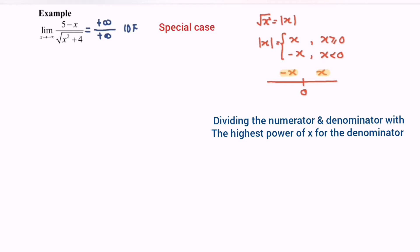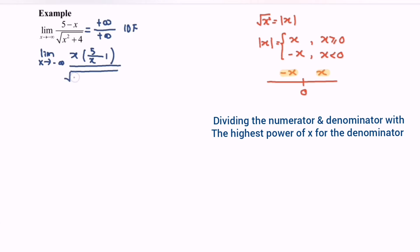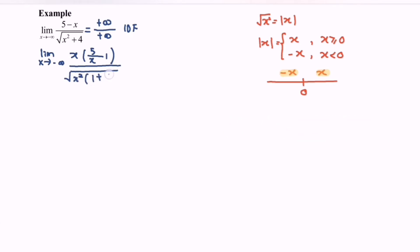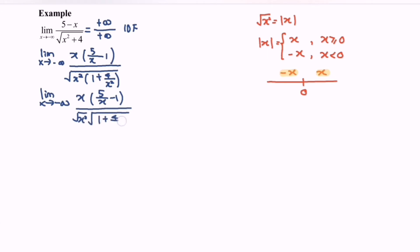So for this special case, what we have to do is factorize the situation. The limit when x approaches negative infinity: factor out x and we will have (5 over x minus 1) over the square root of x squared times the bracket (1 plus 4 over x squared) for the denominator. By using the properties of square root, we split the situation: limit when x approaches negative infinity gives us x times (5 over x minus 1) over the square root of x squared times the square root of (1 plus 4 over x squared).